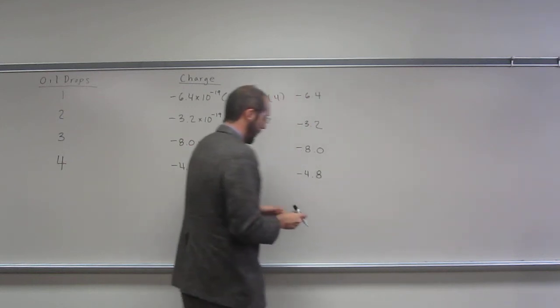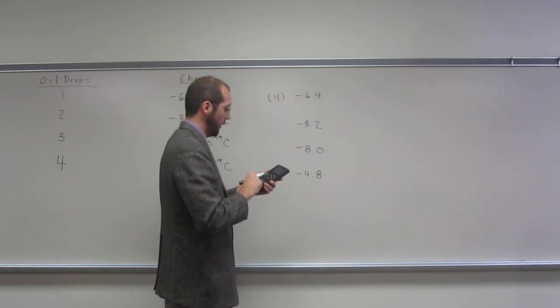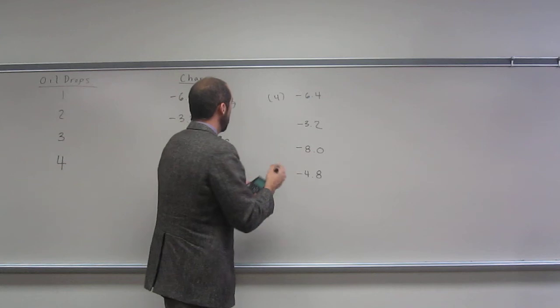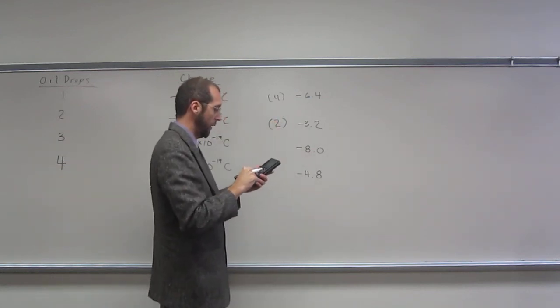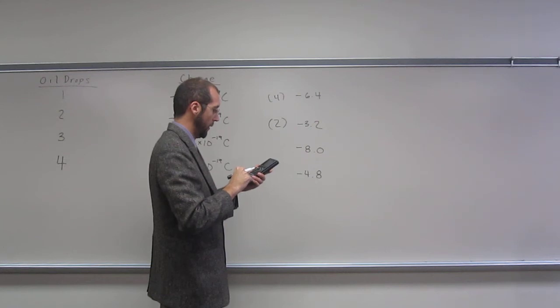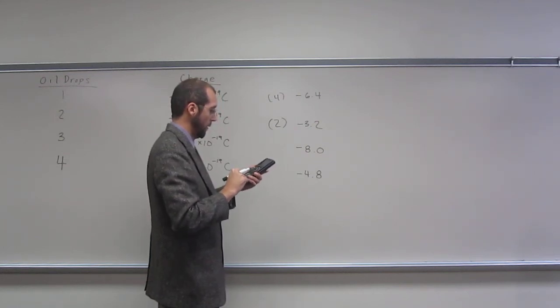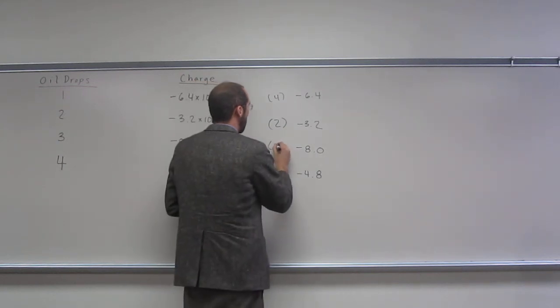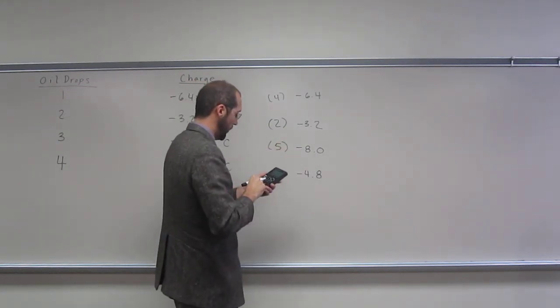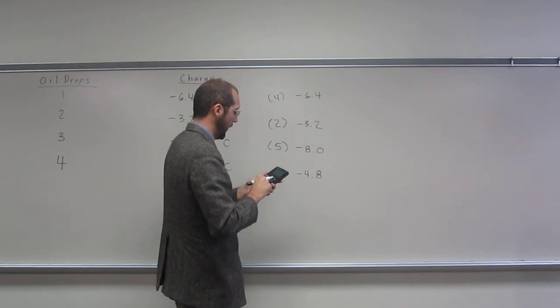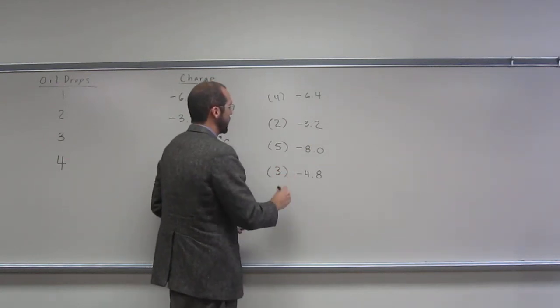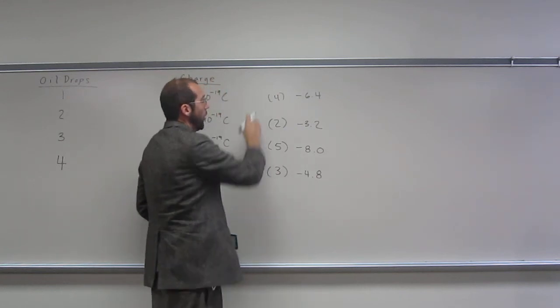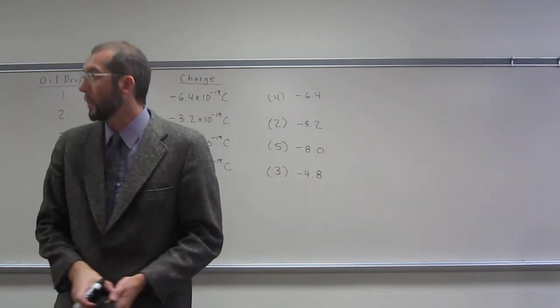So here, of course, 3.2 divided by 1.6 is going to be 2. 8.0 divided by 1.6 is 5. And then, of course, 4.8 divided by 1.6 is going to be 3.